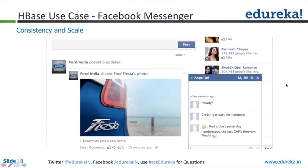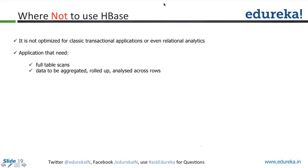Which database is best suited for England Railway? Probably Mongo to some extent. When not to use HBase — wherever you need full table scans, because data stored in blocks becomes really painful and performance suffers when data goes across blocks. Data to be aggregated, rolled up, or analyzed across rows — don't use HBase for those. HBase is right for MapReduce jobs where you have a set of data and run a Map or Reduce function and get results, not for aggregation or roll-up across rows where HBase really performs badly.